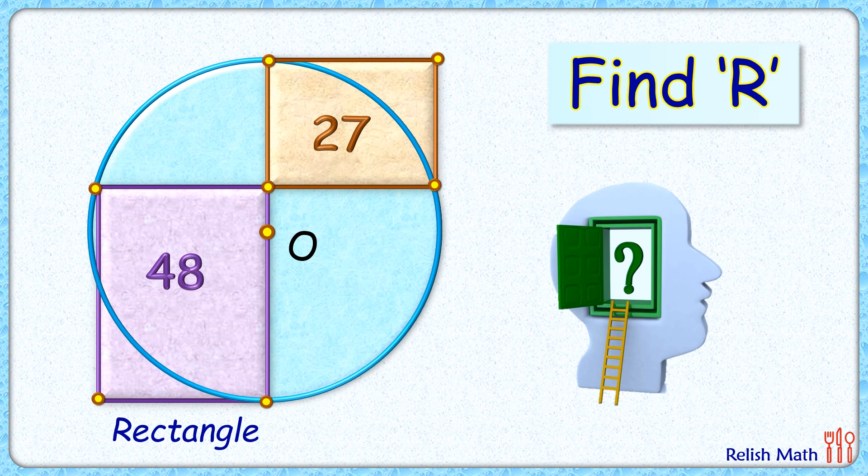This is a really interesting question where we're given two rectangles with areas 48 and 27 square centimeters. A circle is drawn whose center lies on the side of this purple rectangle, and this circle passes through the four vertices of the rectangles. The exciting part is that with this limited data, we have to find the radius of this circle.